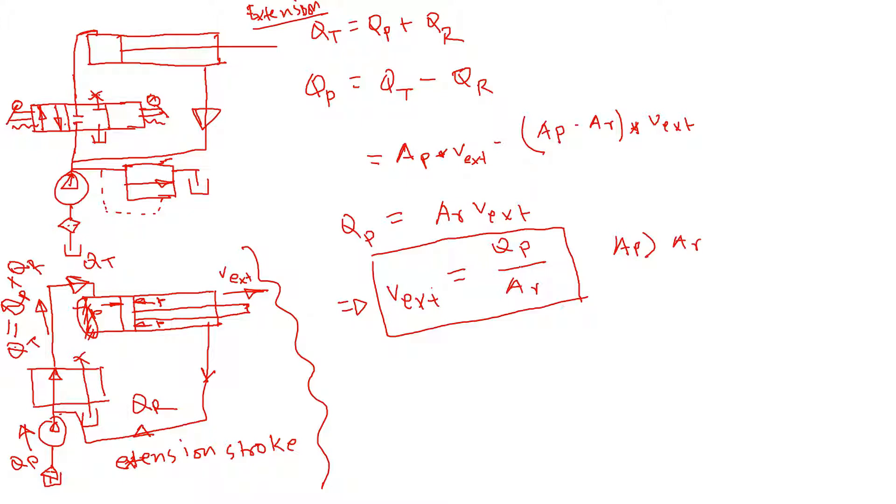So as you can see here, the velocity of extension increases in the regenerative flow. However, the power does not increase. Now in a regenerative circuit, because it's connected here, the return line is connected right after the pump, if we ignore the losses in the forward directional valve, then we'll have basically same pressure on this side.